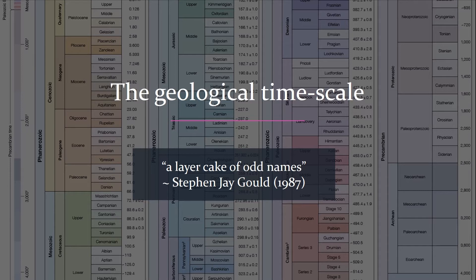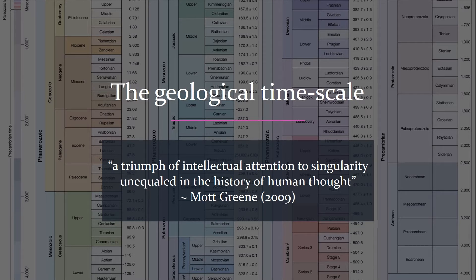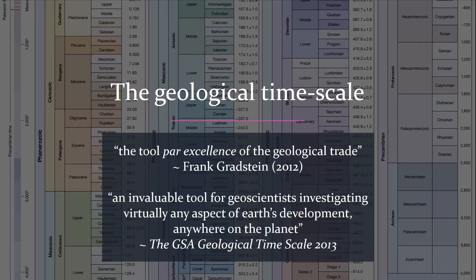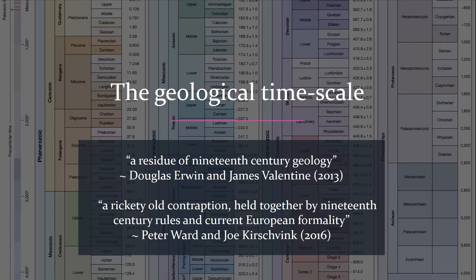The geological timescale is a layer cake of odd names, many of them established in a burst of amazingly fruitful research during the first half of the 19th century. Historian Mott Green describes it as a triumph of intellectual attention to singularity unequaled in the history of human thought. Others have called it the tool par excellence of the geological trade. Reviews aren't always so glowing — Erwin and Valentine describe the scale as a residue of 19th century geology, while Ward and Kirschvink call it a rickety old contraption held together by 19th century rules and current European formality. Yet geologists of all stripes share a profound admiration for the scale and what it represents.